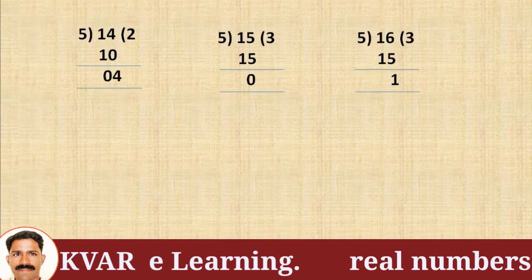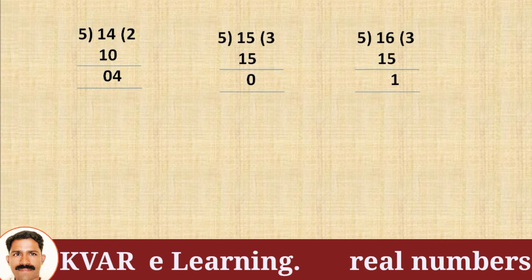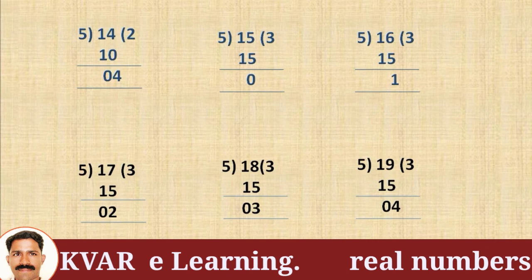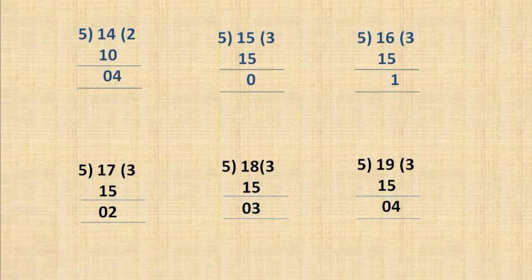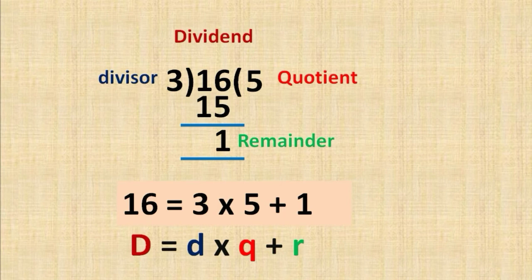Let's take another example with divisor 5: 14, 15, 16, 17, 18, 19 divided by 5. The remainders are 4, 0, 1, 2, 3, 4. Here we observe that the remainder value is always less than the divisor.